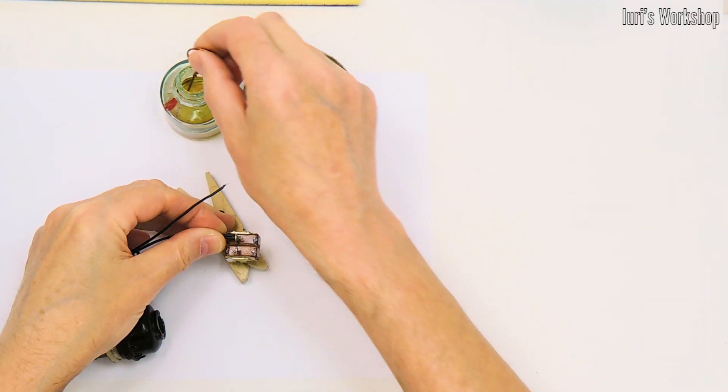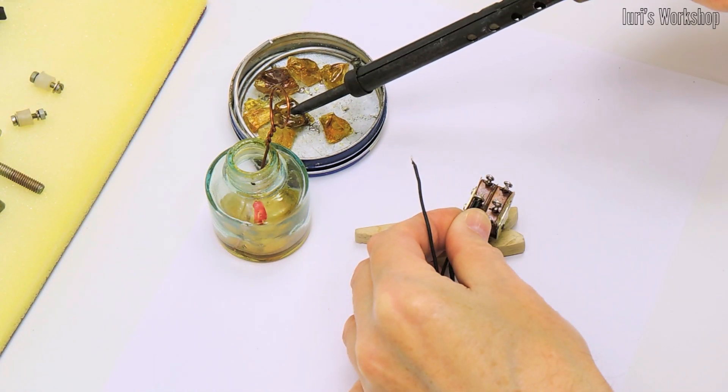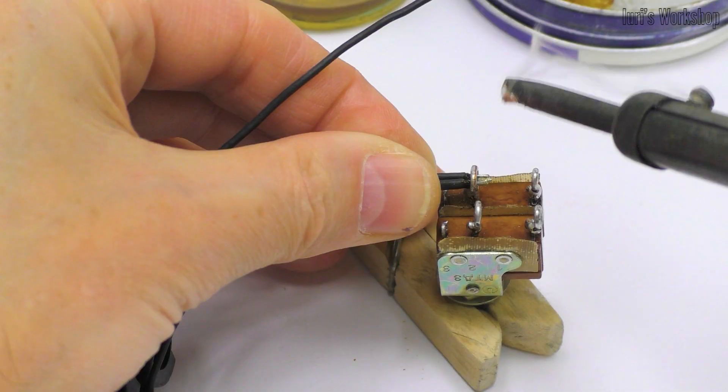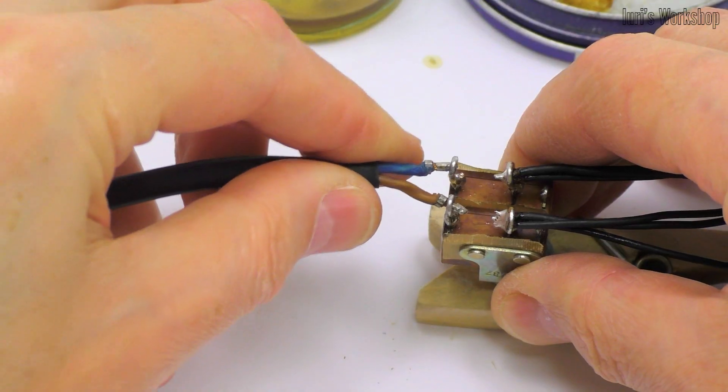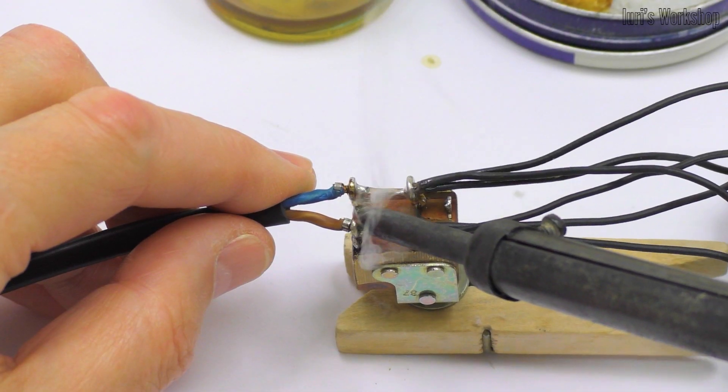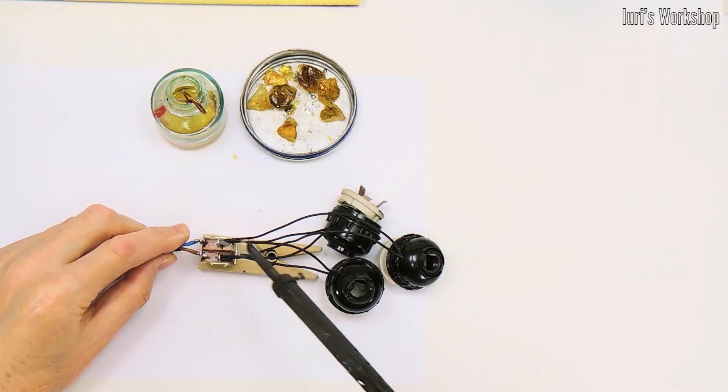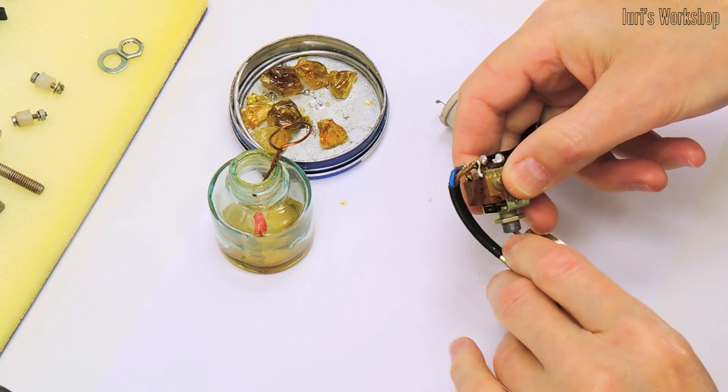Use a switch rated for mains voltage. Be sure to secure the cable inside the spotlight.